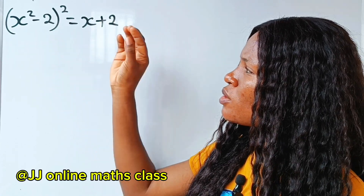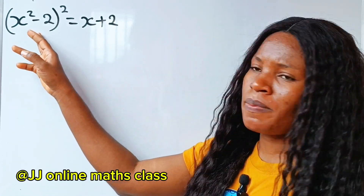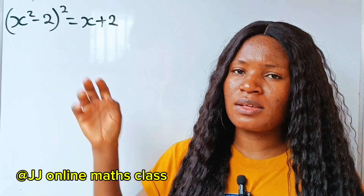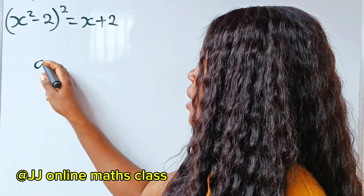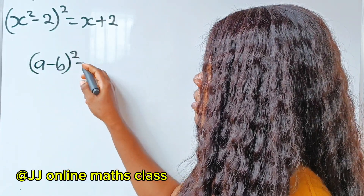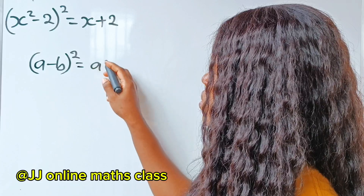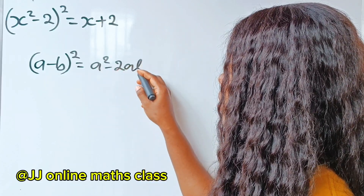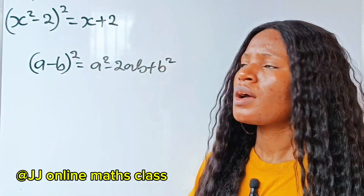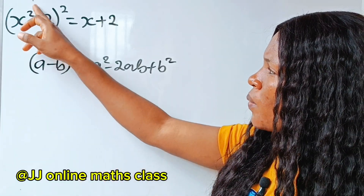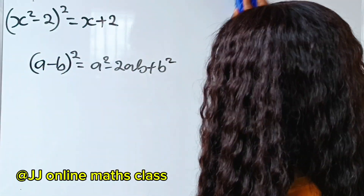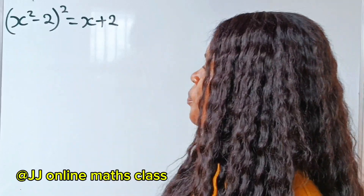Now when you look at this, you can see that we need to expand this. So we are going to use the algebra identity that states that a minus b squared is equal to a squared minus 2ab plus b squared. In this case, our a is x squared, while our b is 2. So we are going to express it in this form.